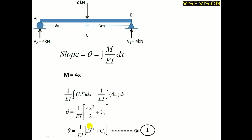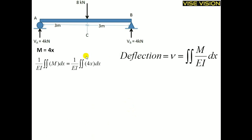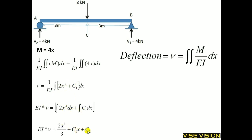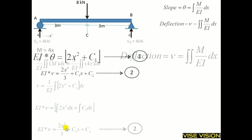For finding the deflection I will take the double integration. The first integration is 2X squared plus C1, as done in the last slide. Applying this integration again, integrating 2X squared and C1 separately, I get the deflection equation. C2 is the constant of integration for this whole equation. Name this equation as equation 2.